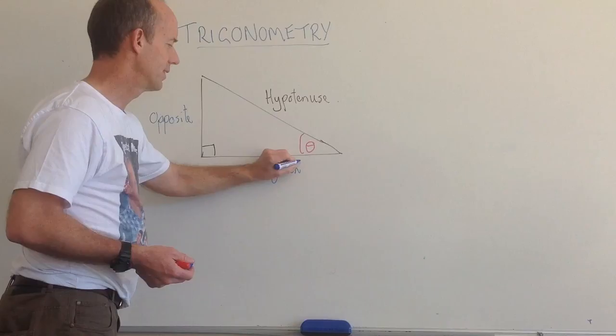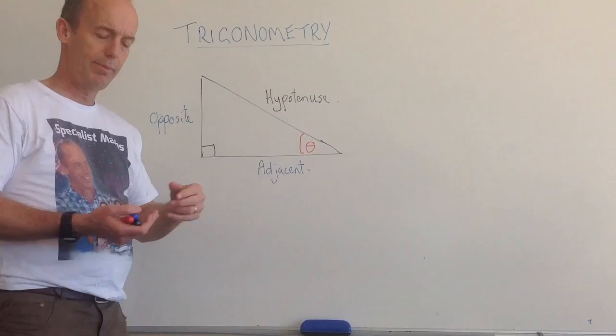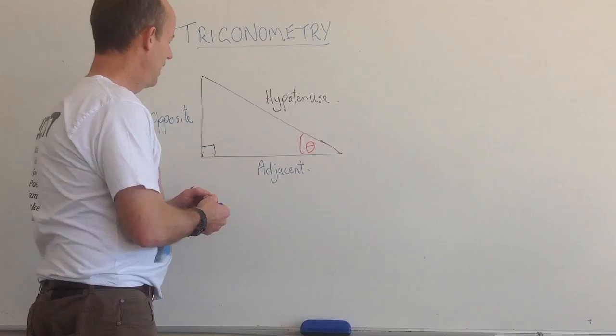And this side that is next to this angle, another word for being next to something is to say that it's adjacent to it. So we have three sides: the hypotenuse, the opposite, and the adjacent.